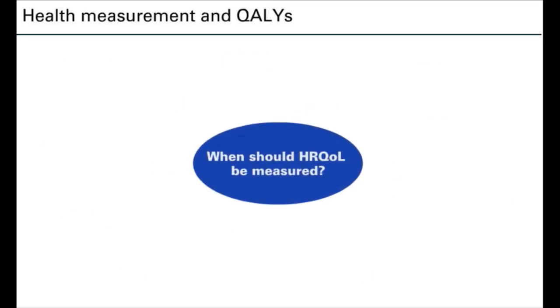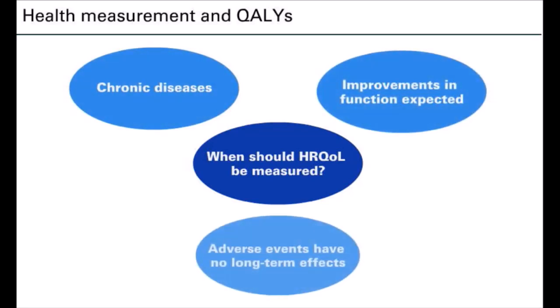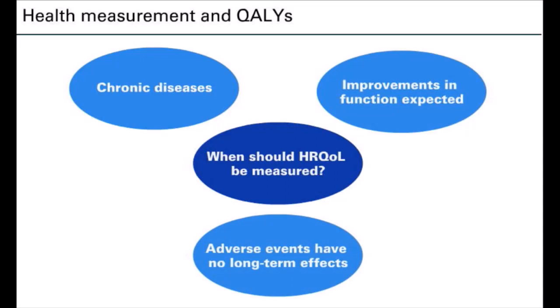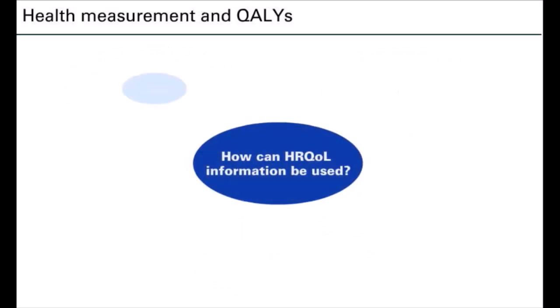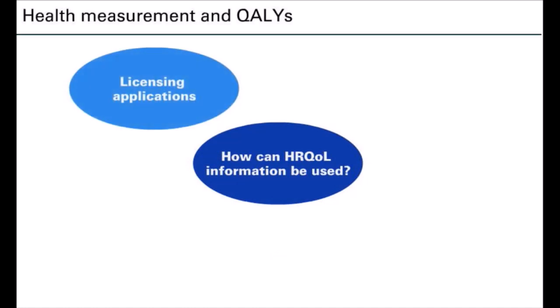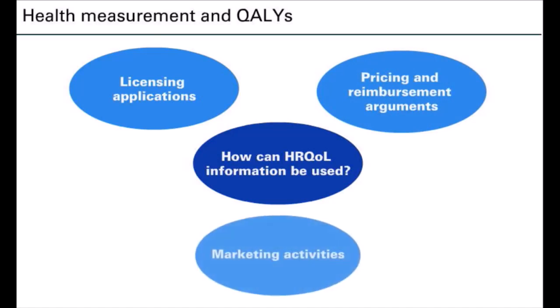Health-related quality of life is important in many situations — for example, when investigating chronic diseases, when improvements in function are expected, or when aiming to demonstrate that a serious adverse event does not affect long-term quality of life. The information can be used in many ways: to support licensing applications, as supportive evidence accepted by regulatory bodies in certain diseases, as part of pricing and reimbursement arguments either as evidence of effectiveness or incorporated into economic evaluation, and to support marketing activities.